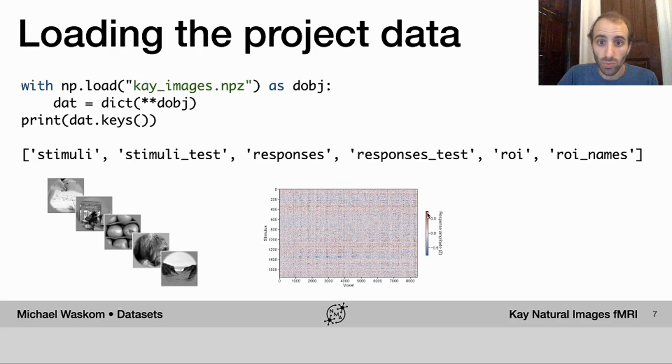The second are the voxel response profiles, so the actual fMRI data. And something that's important to know is that both the stimuli and the responses are split into the original training and validation or test sets from the original paper. So that can be useful if you want to build a model and then compare its performance to what was reported in the original paper.